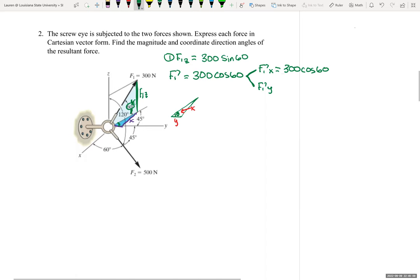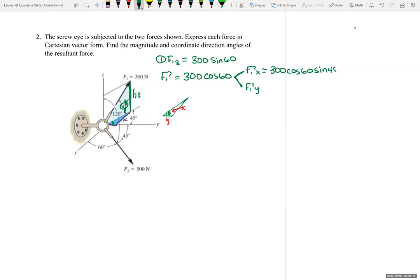So it will be sine times sine 45, and our F1 Y will be 300 cosine 60 positive.